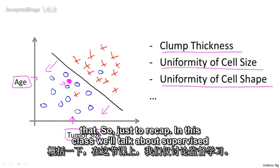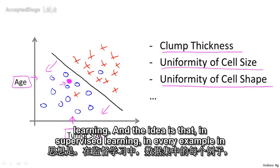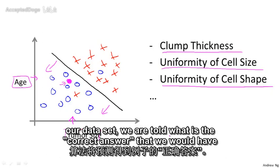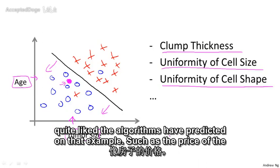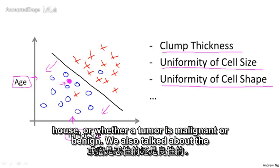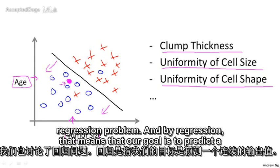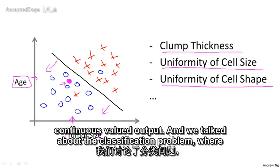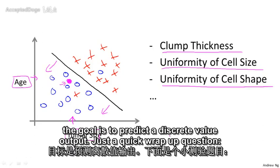Just to recap: in supervised learning, for every example in our dataset, we are told the correct answer that we would like the algorithm to predict — such as the price of the house or whether a tumor is malignant or benign. We also talked about the regression problem, where our goal is to predict a continuous value output, and the classification problem, where the goal is to predict a discrete value output.